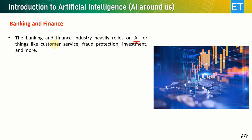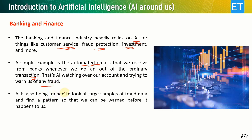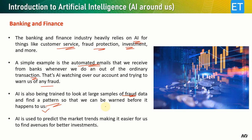The banking and finance industry heavily relies on artificial intelligence for customer services, fraud protection, investment, and more. A simple example is automated emails we receive from banks when an unusual transaction occurs — AI is watching over our account and warning us of fraud. AI is also trained to look at large samples of fraud data and find patterns so we can be warned before it happens. AI is also used to predict market trends, making it easier to find better investment opportunities.